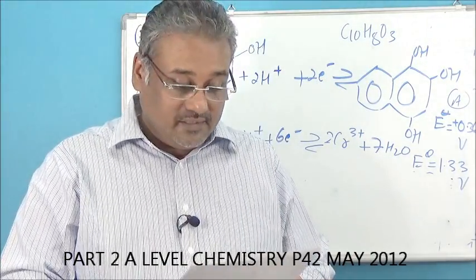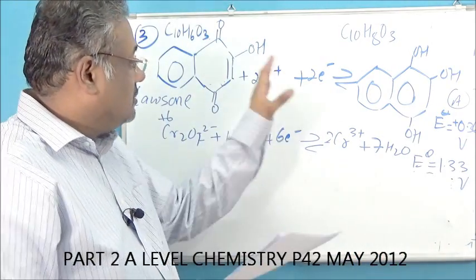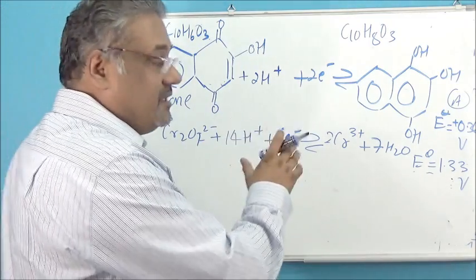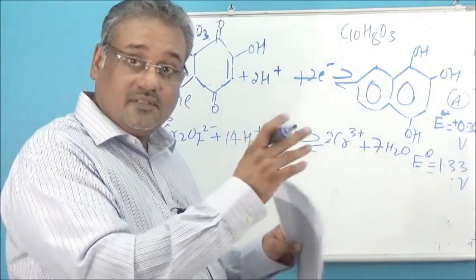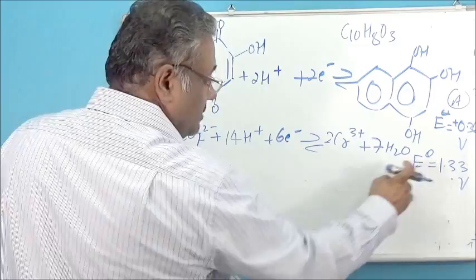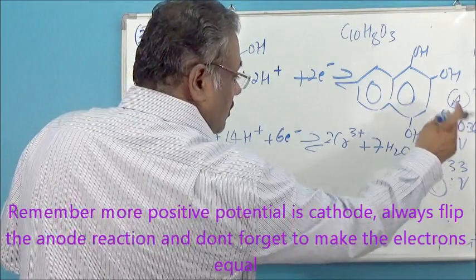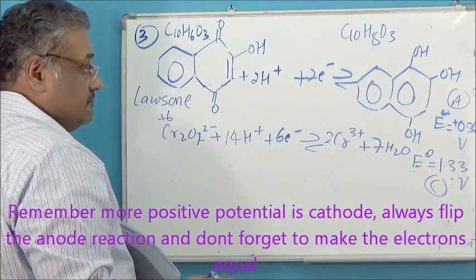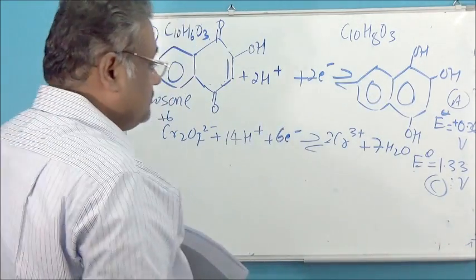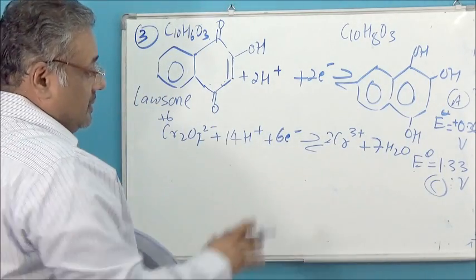Part B2 asks us to construct an equation for this reaction - they want the overall redox reaction. This is a very repeated exam question, so it's good to have the skill. First, using the previous concept, identify your cathode and anode. Always remember you need to flip the anode equation the other way around, because at the anode electrons are lost. The cathode equation is copied as it is from the data booklet.